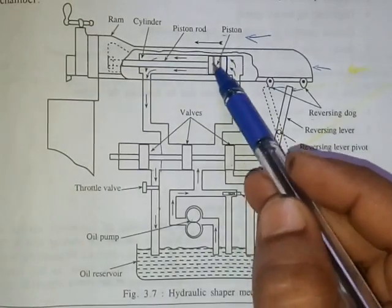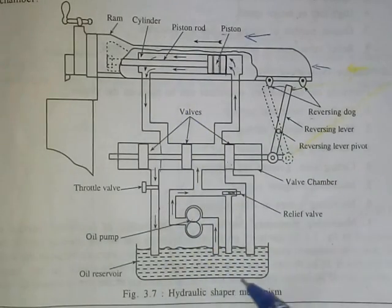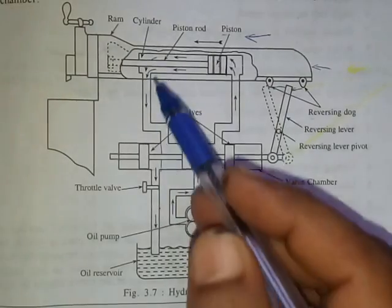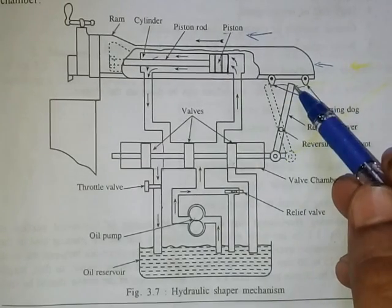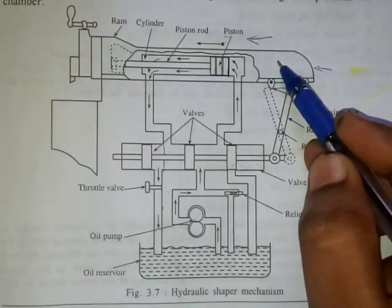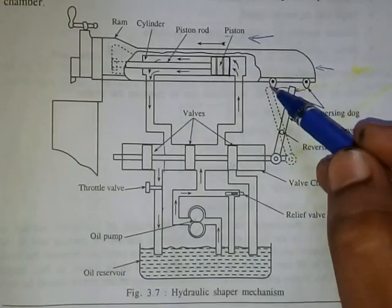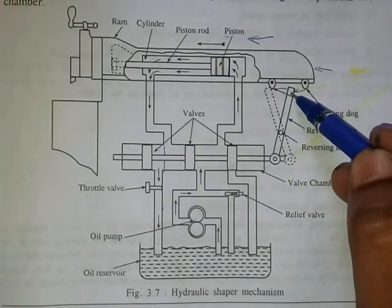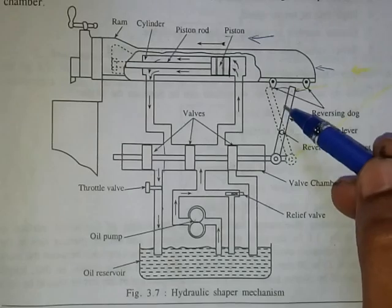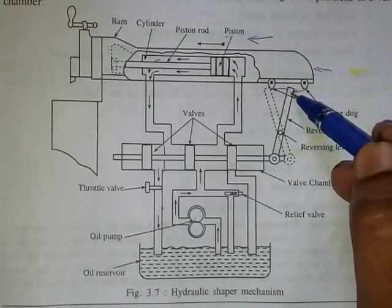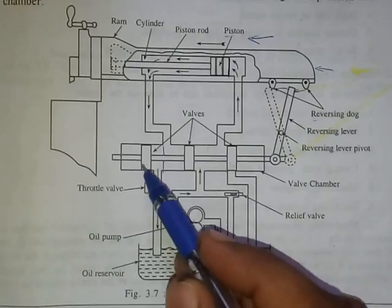After completion of the forward stroke, the oil left in the cylinder comes back to the reservoir. When the ram completes the forward stroke, the reversing dog hits on the surface of the reversing lever, and the reversing dog occupies the new position after hitting the lever.